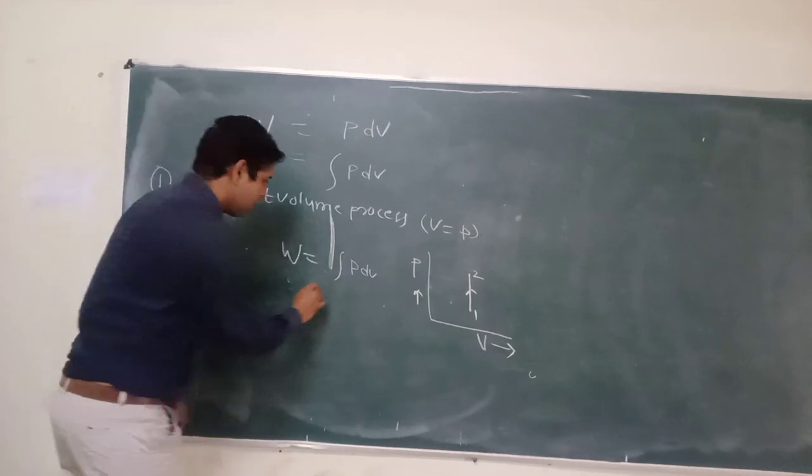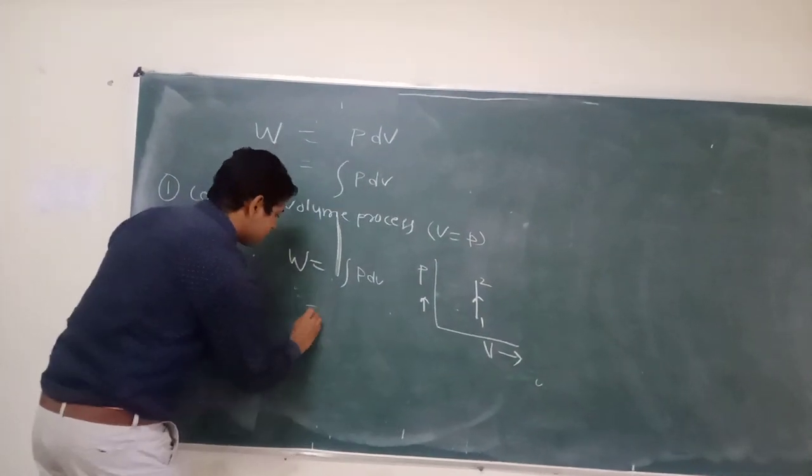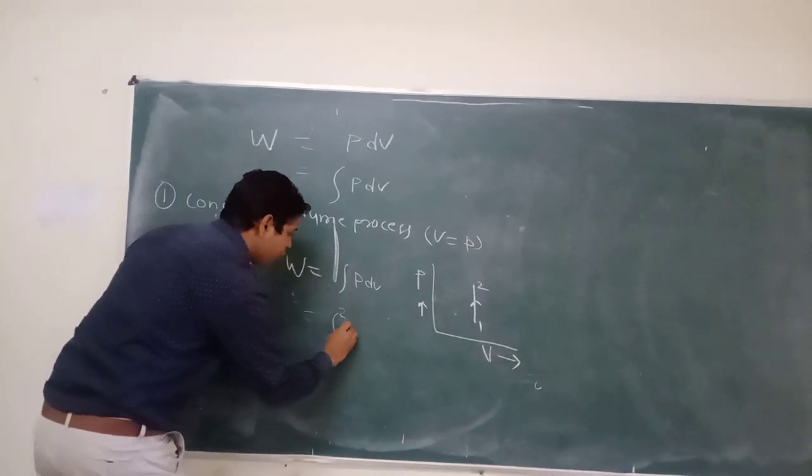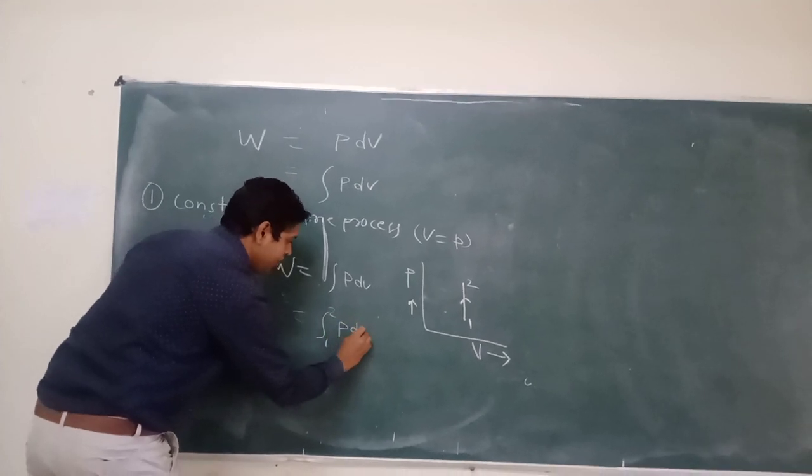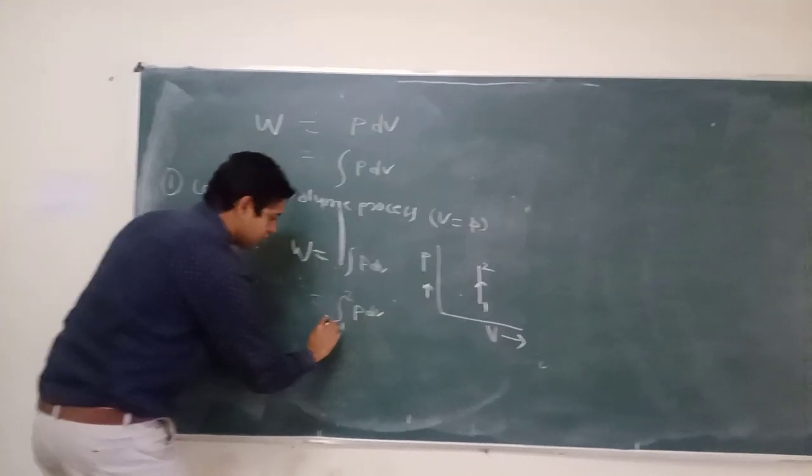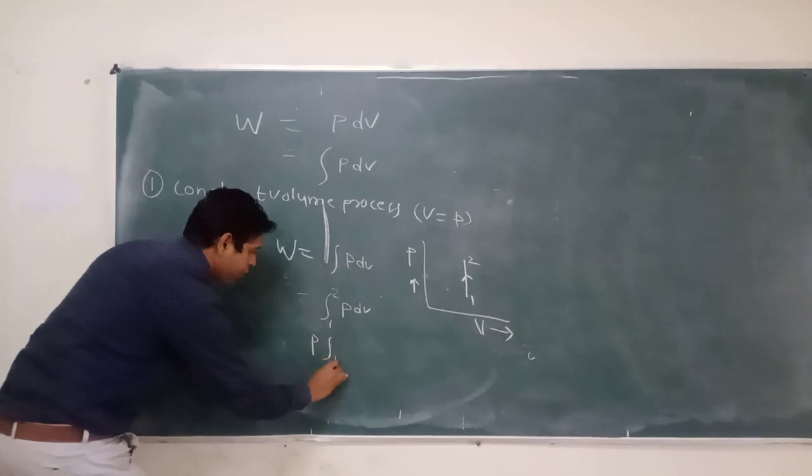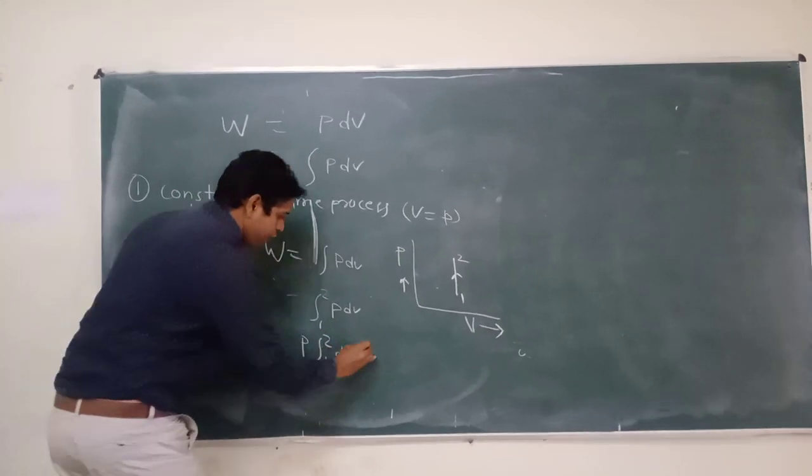If we derive the work done and we keep the limits 1 to 2, PdV. This is the constant 1 to 2, V.